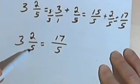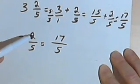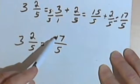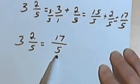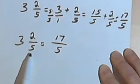Add that to the numerator. So 3 times 5 is 15, plus 2 is 17. That's your new numerator. The denominator is going to be the denominator in the original mixed number.